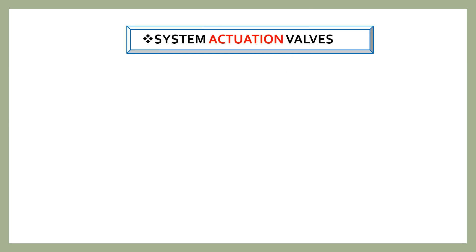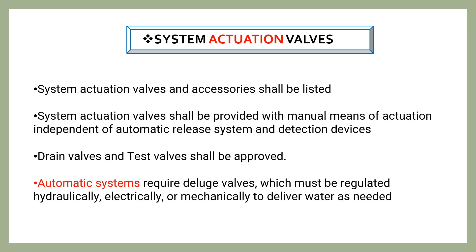The water spray system will have system actuation valves which are automatic. System actuation valves and accessories shall be listed, and the actuation valves shall be provided with manual means of actuation independent of the automatic release system and detection devices. Drain valves and test valves shall be approved. Automatic systems require deluge valves, which must be regulated hydraulically, electrically, or mechanically to deliver water as needed.